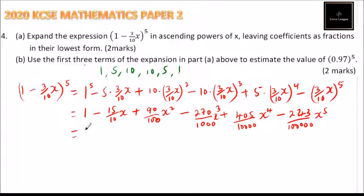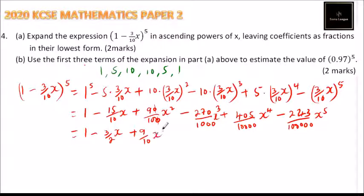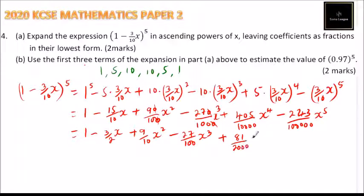When we simplify, we get: 1 minus 15 over 10 simplifies to 3 over 2 x, plus 9 over 100 simplifies to 9 over 100 x squared, minus 27 over 100 x cubed, plus 405 divided by 10,000 simplifies — dividing both by 5 — to 81 over 2,000 x to the power of 4, minus 243 over 100,000 x to the power of 5.